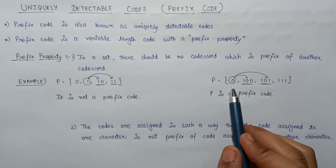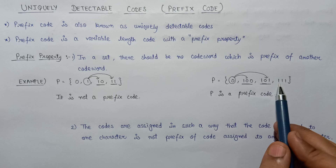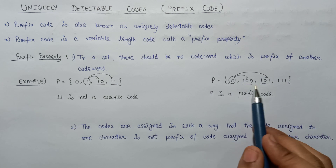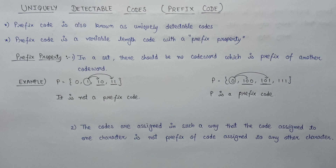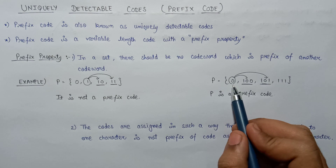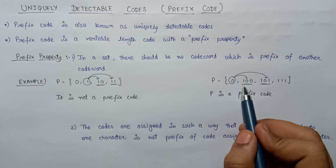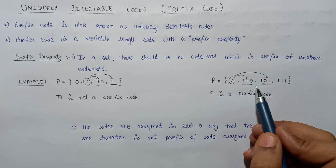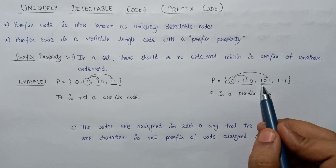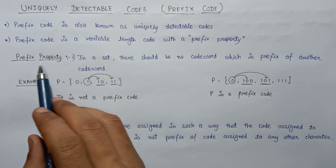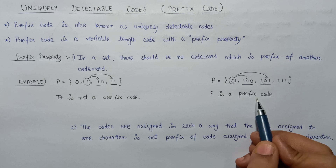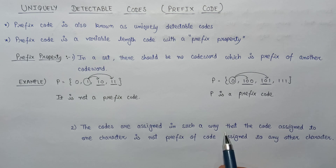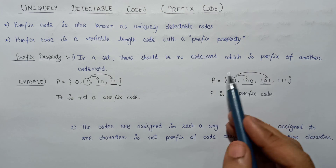Now let's consider a second example set consisting of four code words: 0, 100, 101, and 111. If we analyze this set carefully, we find that 0 is present in the code words 100 and 101, but it is not present at the first position — that is, as the MSB bit. That's why 0 is not acting as a prefix to 100 or 101. So this set follows the prefix property and is a valid prefix code.